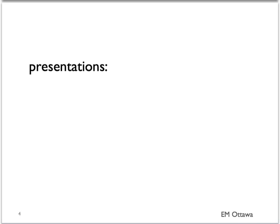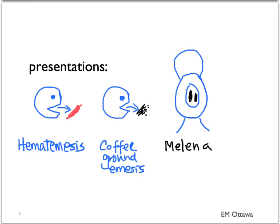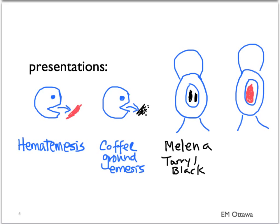Upper GI bleed can present in four different ways: hematemesis, or blood in the vomit. If the blood has been sitting in the stomach for a bit of time, when it comes out it will look like coffee ground. Blood in the GI tract can also come out from the other end. It can present as melena if the blood has been digested by the GI tract — melena is tarry black stool. The last way an upper GI bleed can present is bright red blood per rectum. If the bleeding is brisk, there has been no time for it to be digested, so it will remain bright red.